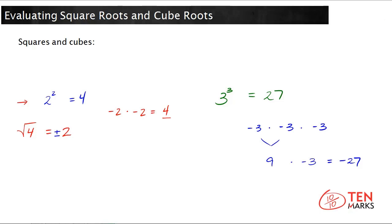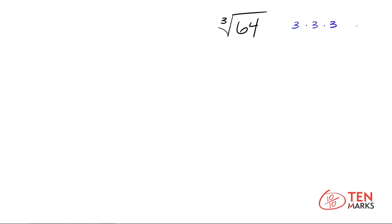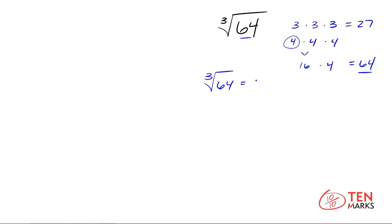Let's try evaluating some roots. First, the cube root of 64. Is there any number you can multiply by itself three times to get 64? Let's try 3 times 3 times 3 — that's 27, which is less than 64. Try 4 times 4 times 4: 4 times 4 is 16, times 4 again is 64. So the cube root of 64 equals 4. And again, this can't be negative because you can't multiply a negative number by itself three times and get a positive answer.